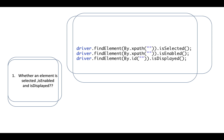How to check whether an element is selected or not: use the isSelected() method. How to check if an element is enabled or not: use isEnabled(). How to check if an element is displayed: use isDisplayed().